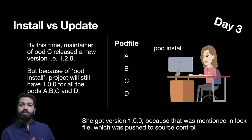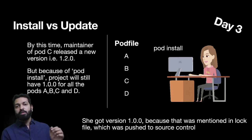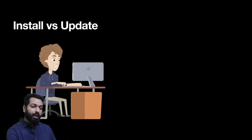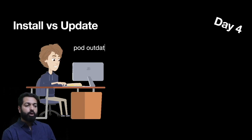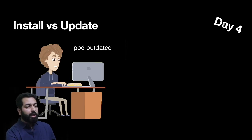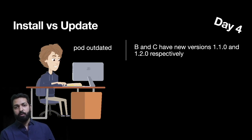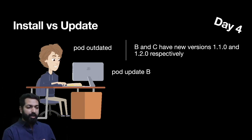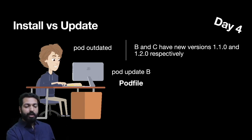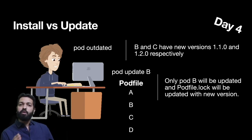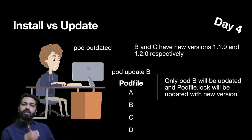By that time, the maintainer of pod C published version 1.2.0, but she still gets 1.0.0 because Podfile.lock was in source control — both developers are on the same page. On day four, the first developer runs pod outdated and discovers that B and C have new versions 1.1.0 and 1.2.0 respectively. He decides to update pod B by running pod update B. Because he specifically named the pod, only B is updated and C remains at 1.0.0. Podfile.lock is updated with B's new version, and when teammates pull and run pod install, they will be on the same version.